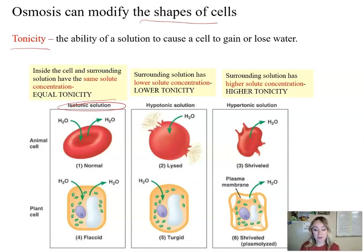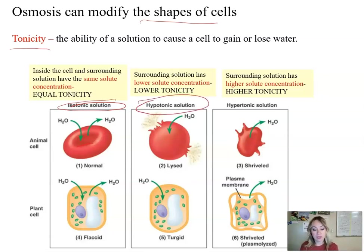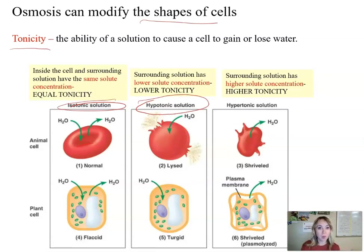If we take a cell and immerse it in a hypotonic solution, water is going to be moving into the cell and the cell could even lyse — meaning burst — because it may not be able to hold all the water coming in. This happens because the surrounding solution outside the cell has lower solute concentration, so there is more water, and water moves from high concentration to low — into the cell.